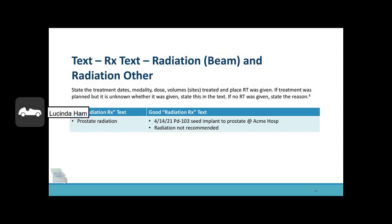In the radiation text fields for radiation beam and radiation other, state the treatment dates, modality, dose, volumes or sites treated, and the place the RT was given. If the treatment was planned but it is unknown whether it was given, state this in the text. If no RT was given, state the reason. Please see the examples below of bad radiation text and good radiation text.